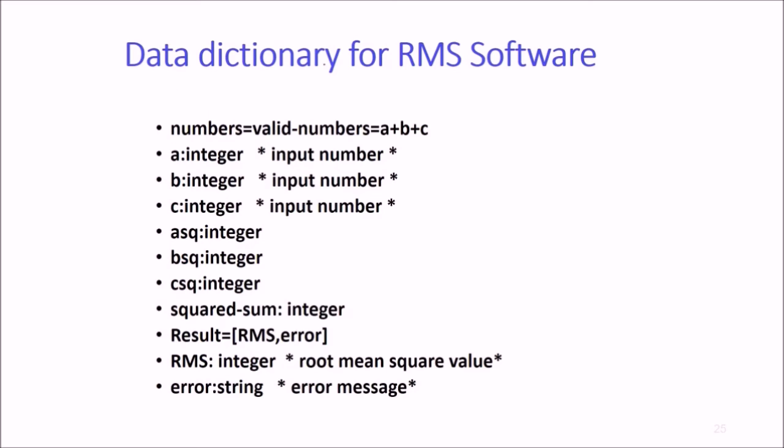For RMS software, these bullets represent the data dictionary. You have ABC, valid number A as input number with comment, b colon integer, c colon integer, a sq integer, b sq integer, c sq integer, sum colon. Then equal sign for result, RMS integer, error string for error message.